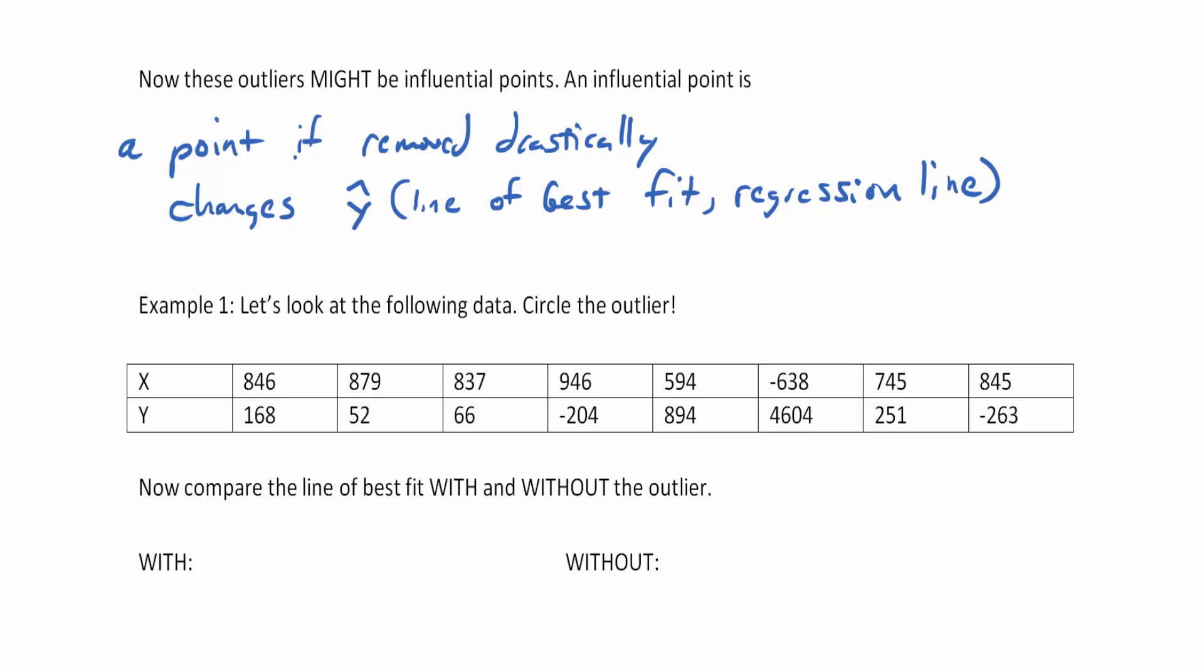An influential point, if removed, drastically changes the y line. So to test to see if a point is influential or not, we first of all find the outlier. Then we take the linear regression t-test and get the line of best fit, and then we check to see what happens when we remove the outlier, and then check the linear regression line again using our calculator.